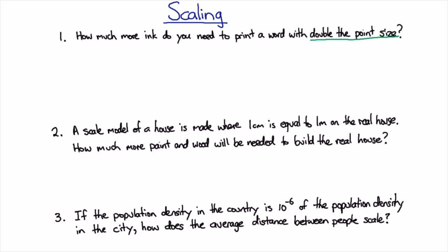Now, obviously, the amount of ink I need depends on the volume of ink, so it's the volume of ink that makes up that letter. But when I double the point size, I'm not really changing the thickness of that letter as it's written on the page. I assume so. And so really what matters is the area.